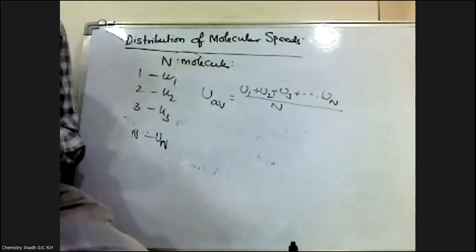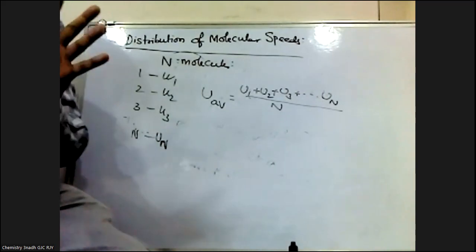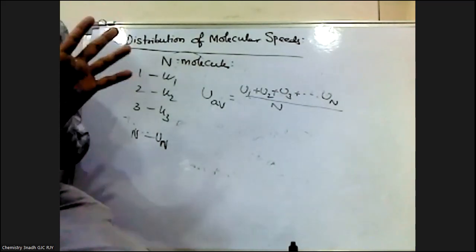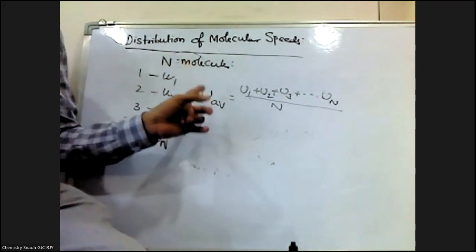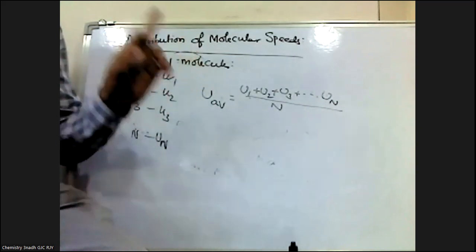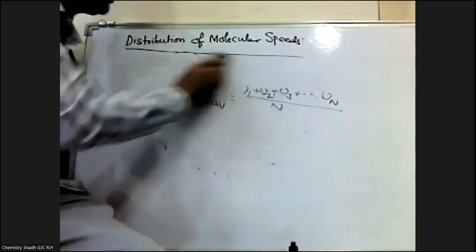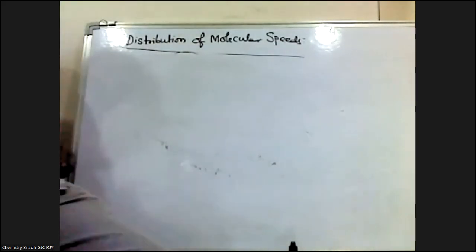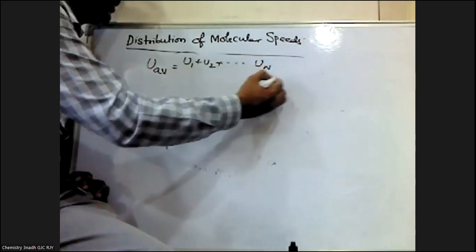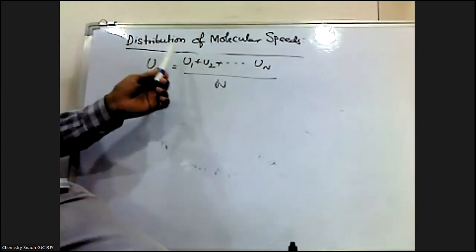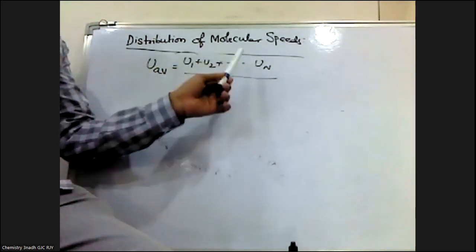As the molecules are moving randomly in all directions and colliding with each other and with the walls of the container, their speed and energy are not the same. For any two molecules, their speed and energy are not the same at a given instant. Thus, we can obtain only the average value of the speed of the molecule. Average speed is given by: u_average = (u1 + u2 + u3 + ... + un) / n, where u1 corresponds to the velocity of molecule 1, u2 to molecule 2, and so on.